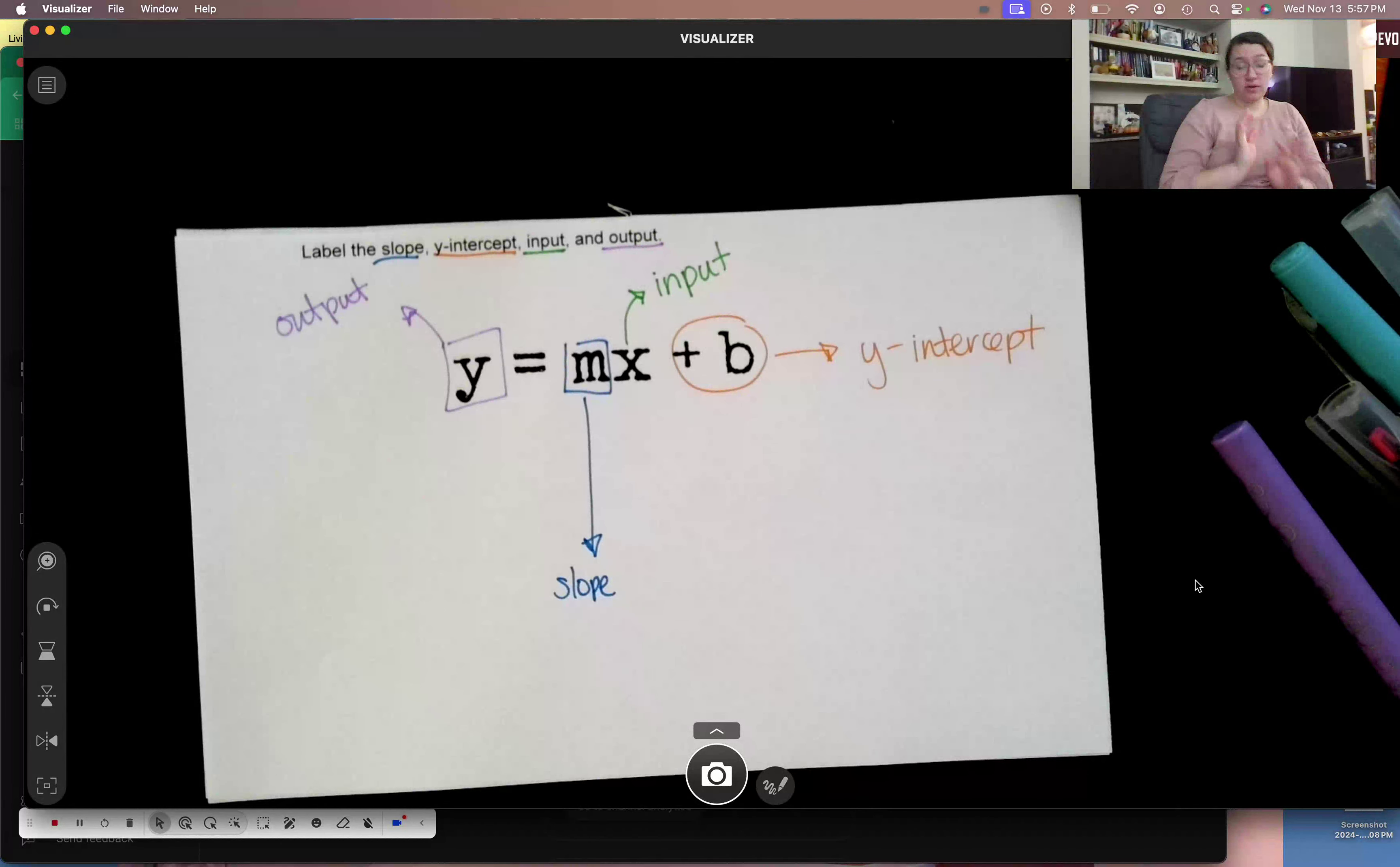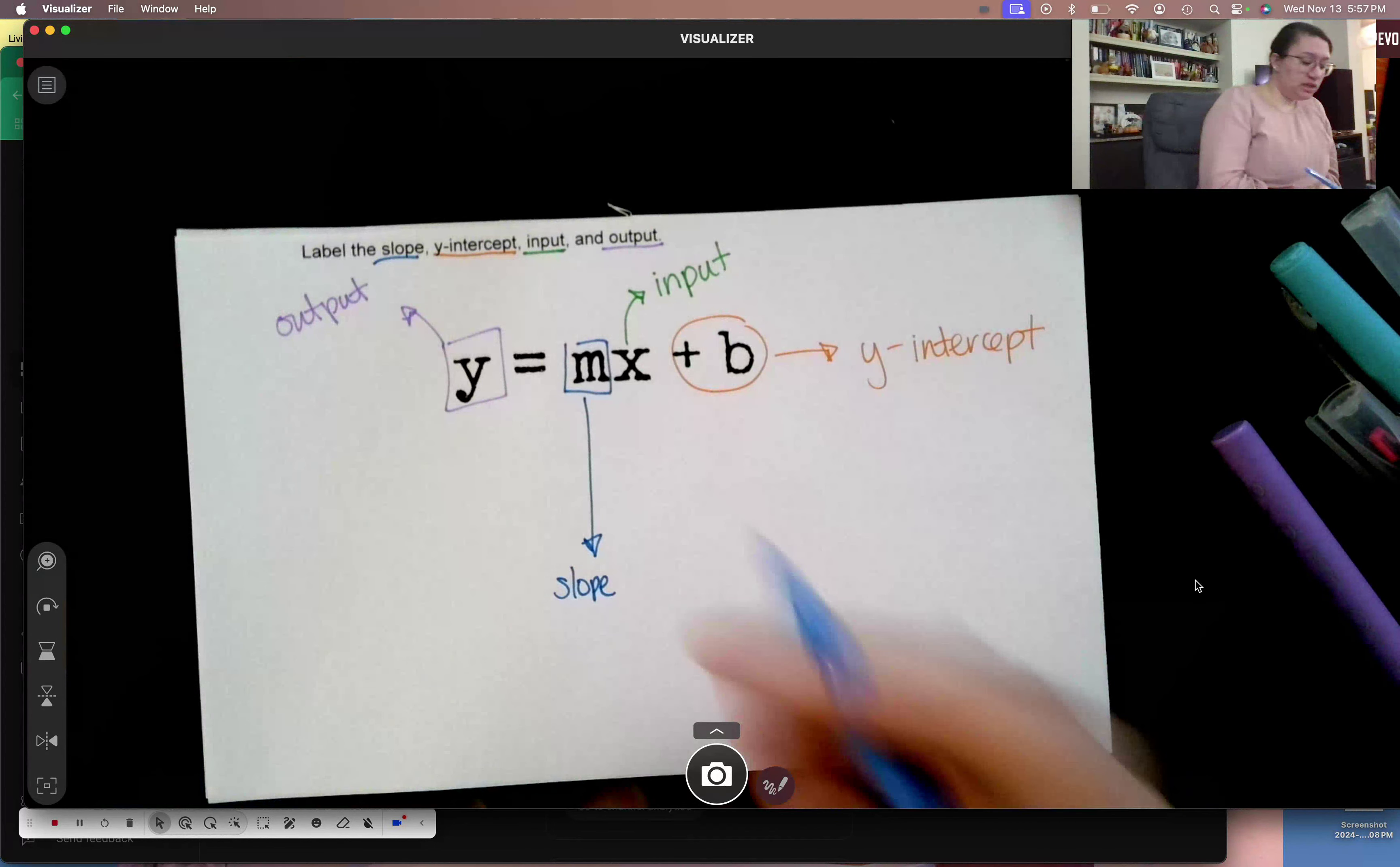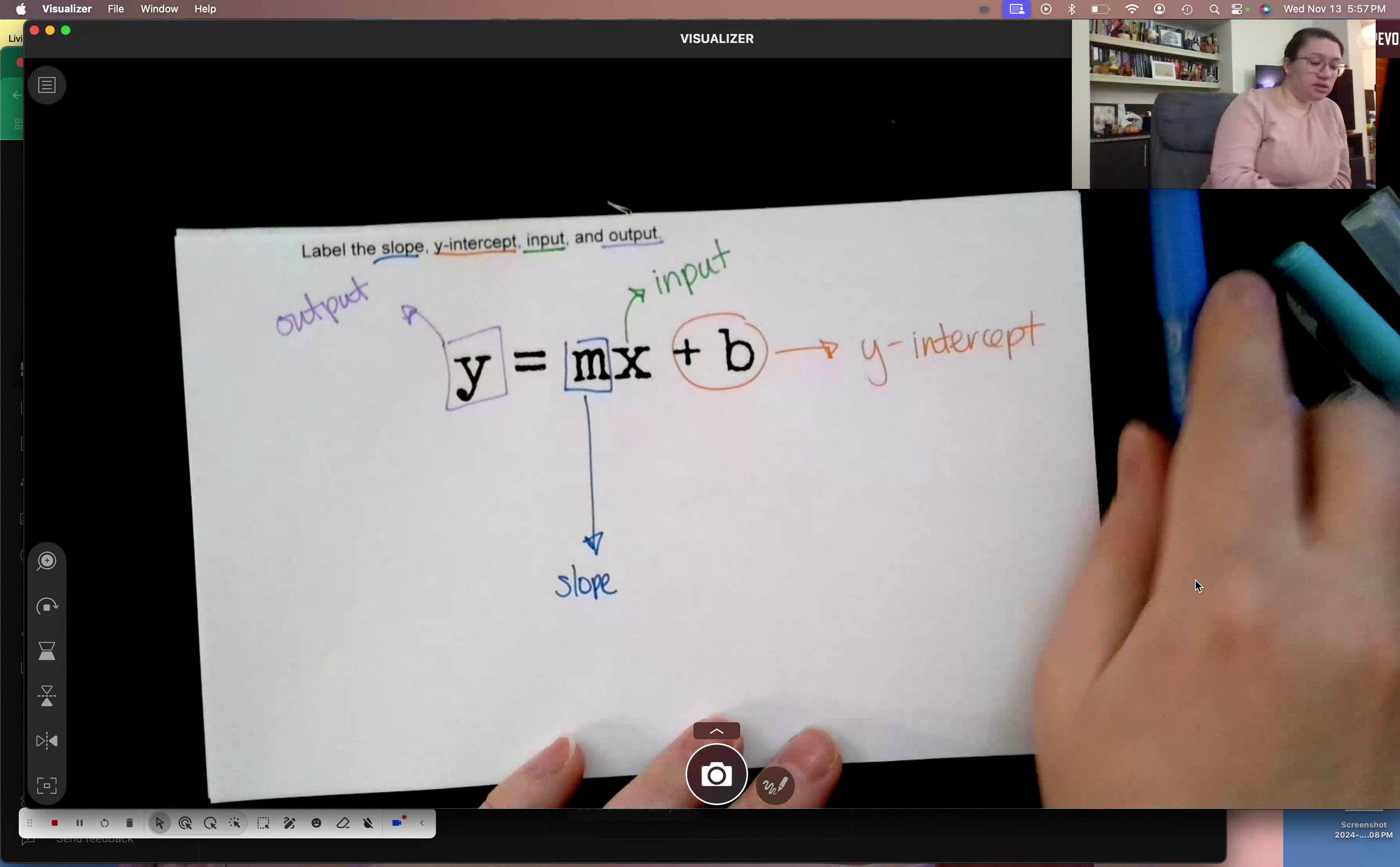So again, hopefully you notice some things as you're playing around with the different parts of the equation. What did you notice changing on your slope?